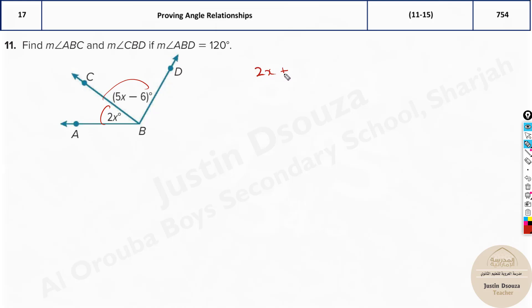So if you add 2x plus 5x minus 6, it must be equal to 120 degrees because they told ABD is 120 degrees, right. Now add them up: 5 plus 2 is 7x. This to the other side will be 126 because it'll be 120 plus 6. Now divide both the sides by 7.